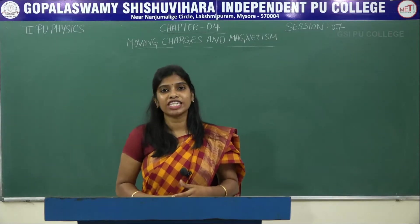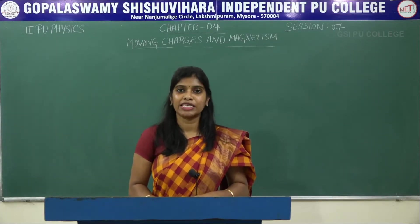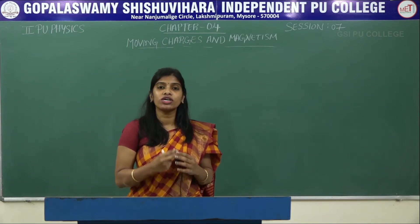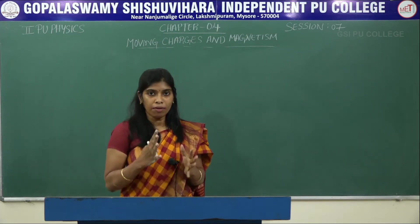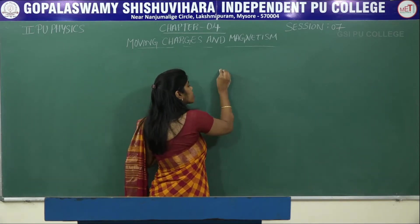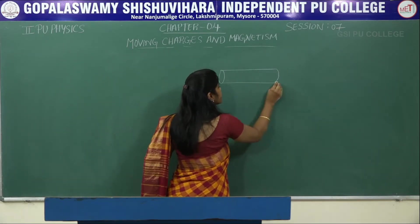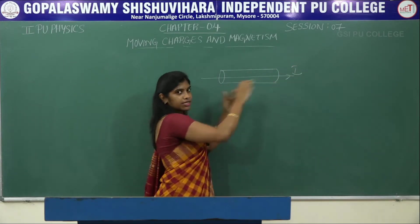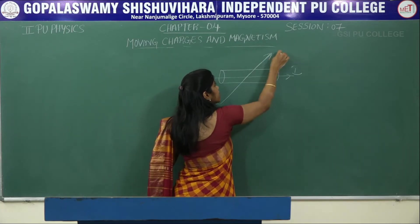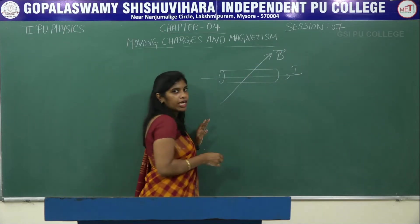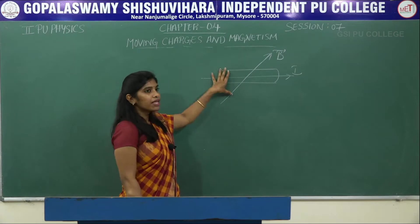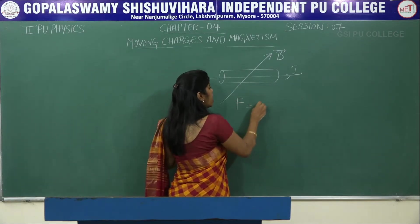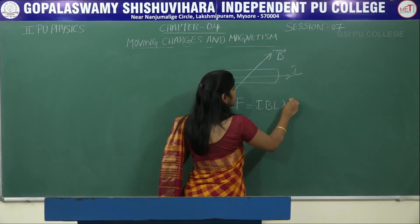Hello everyone, welcome to session 7 of Moving Charges and Magnetism. In session 2, I discussed the force on a current-carrying conductor due to a magnetic field. If a conductor carries current in a certain direction and is placed in a magnetic field, the conductor experiences a force given by the formula F = IBL sinθ.